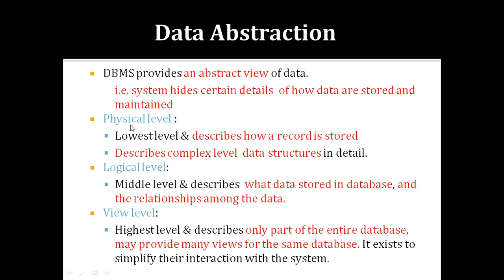The first level is the Physical Level — the lowest level. It describes how a record is actually stored, covering complex low-level data structures in detail. The physical level is concerned only with how data is stored.